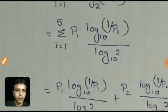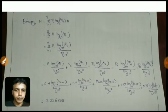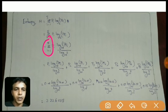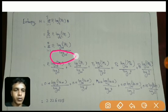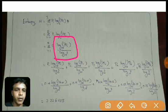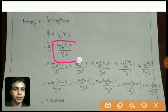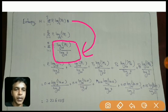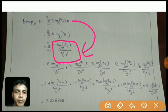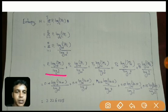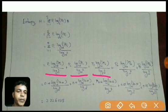Applying this modification, the entropy formula becomes the summation of p_i · [log(1/p_i) base 10 / log(2) base 10]. Expanding for i equals 1 to 5, we get p1·log(1/p1)/log(2) + p2·log(1/p2)/log(2) + p3·log(1/p3)/log(2) + p4·log(1/p4)/log(2) + p5·log(1/p5)/log(2), substituting each probability value.